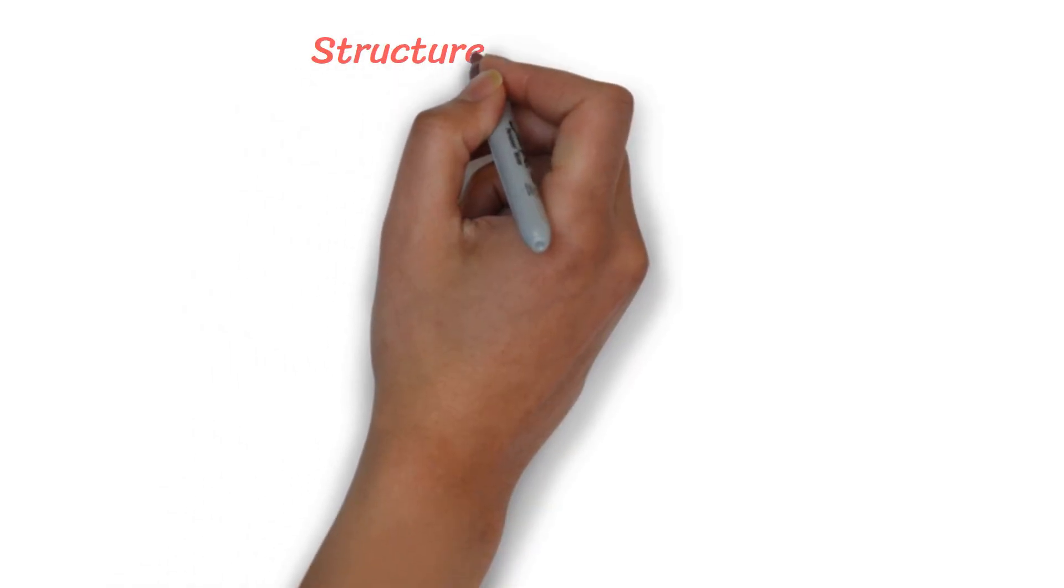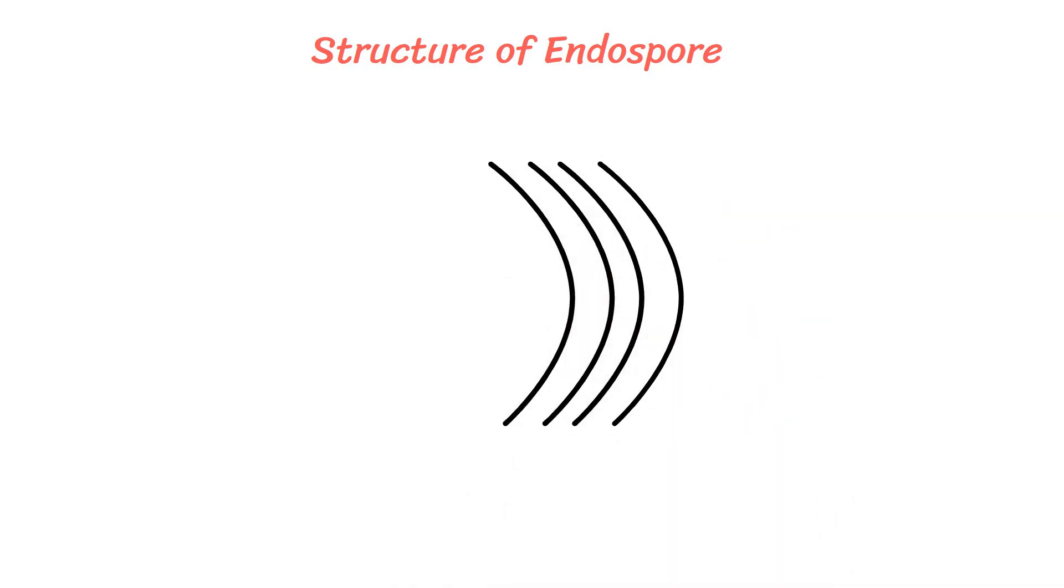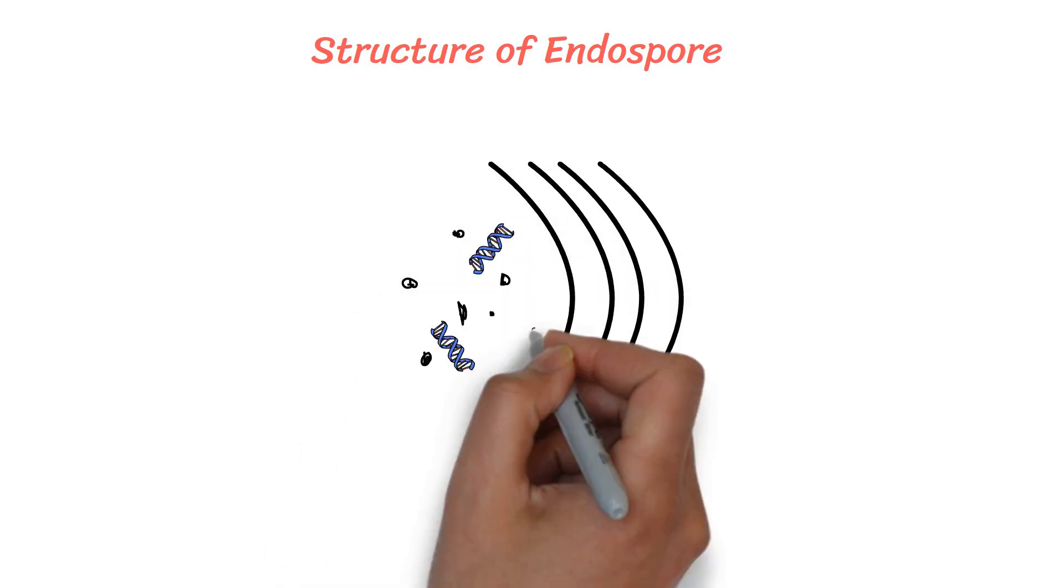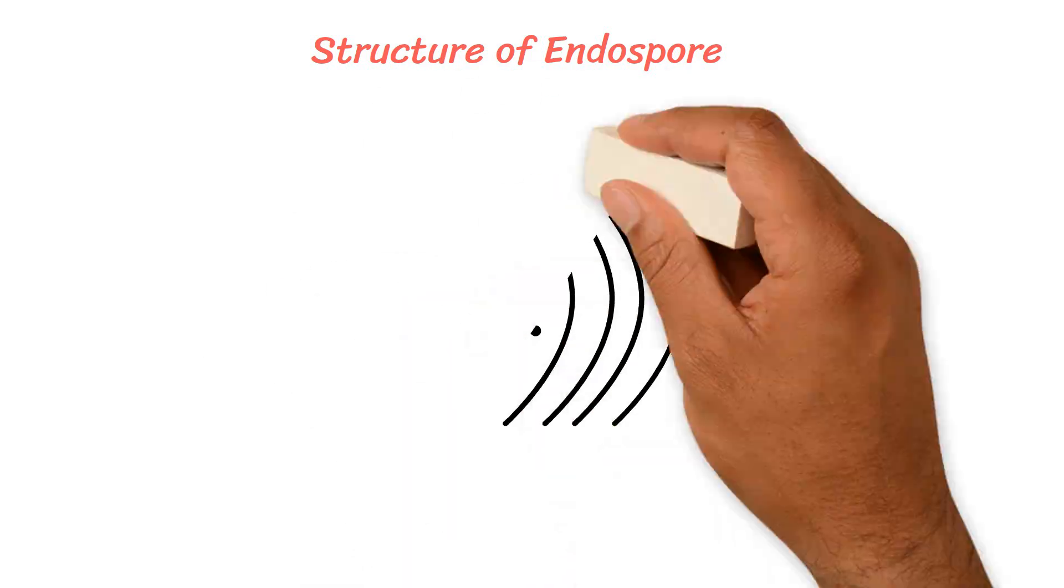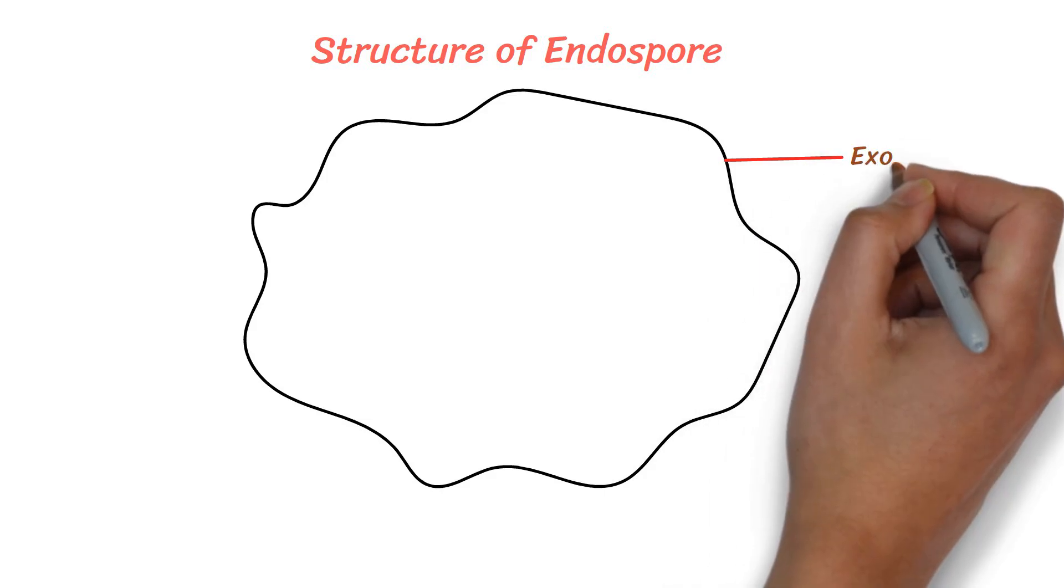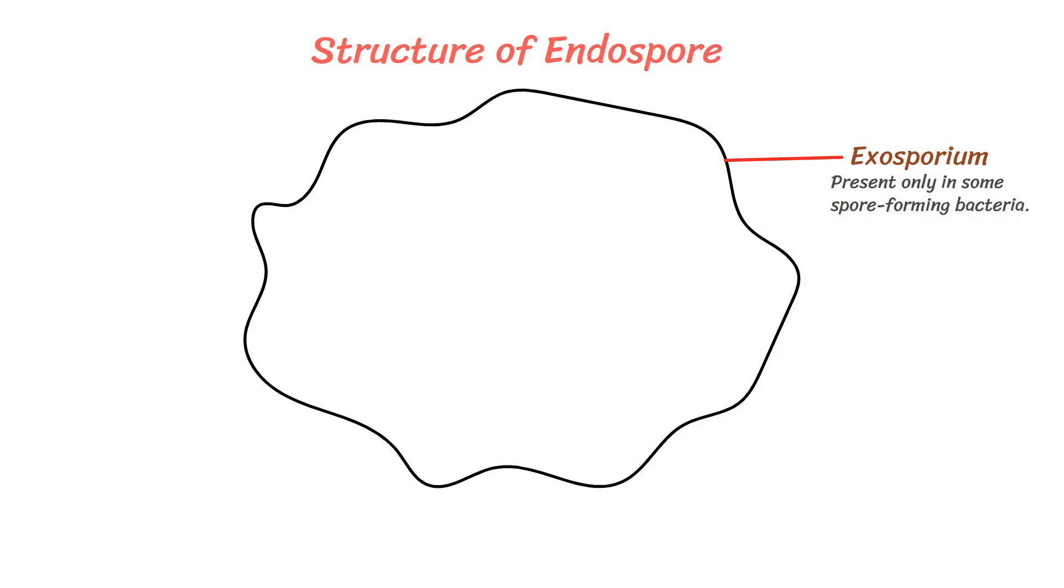The structure of an endospore is highly specialized, and consists of several distinct layers and components. Each layer serves a specific function in protecting the bacterial DNA and cellular components during the dormant state. The spore is externally surrounded by a thin layer called exosporium. It is composed of proteins and present only in some spore-forming bacteria.